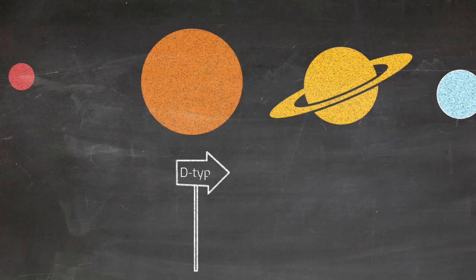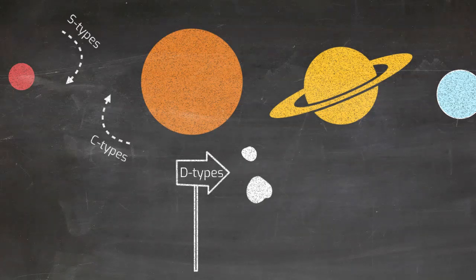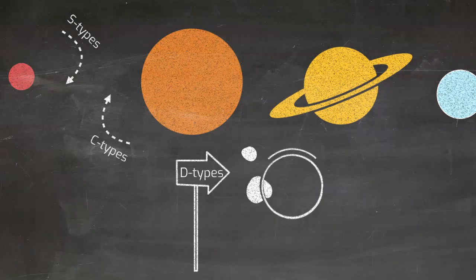D-type asteroids are mainly found in the outer solar system, further from the Sun than either S-type or even C-type. They are expected to be very rich in both organics and water-containing minerals.